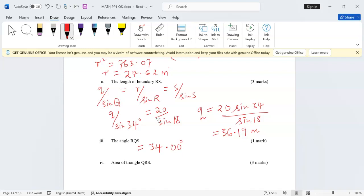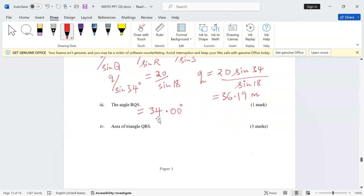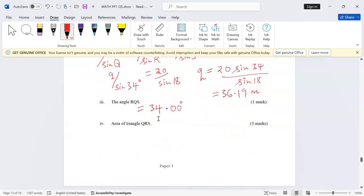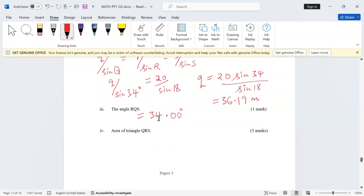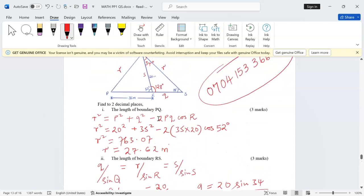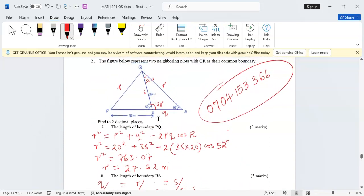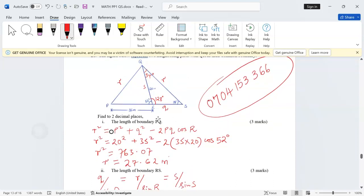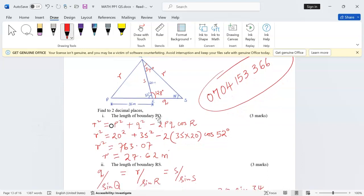Then area of triangle QRS. The triangle on the right hand side, we just need two sides and the sine of an angle in between them. For example, the length of q, the length of s, then the angle in between them is 128.